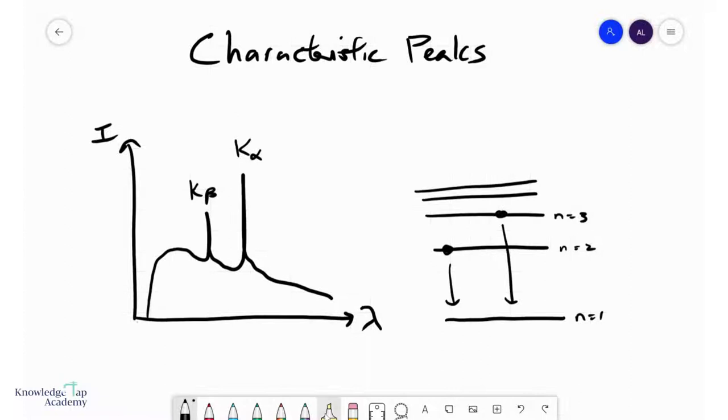Probably the most important feature in an X-ray spectrum is the characteristic peaks. These are unusually high spikes in intensity at very specific wavelengths. The peaks have names: we call this very high peak K-alpha, and this one K-beta.